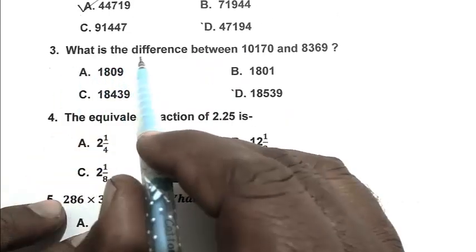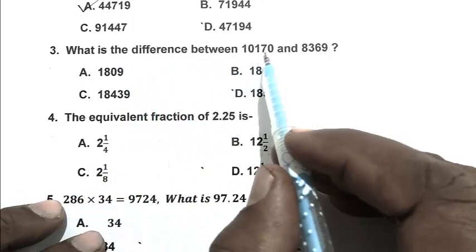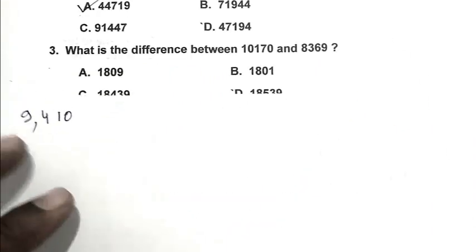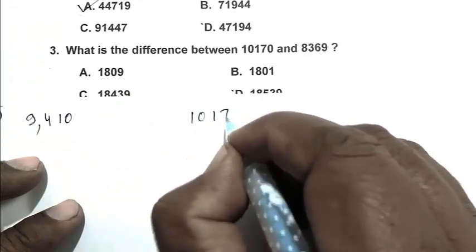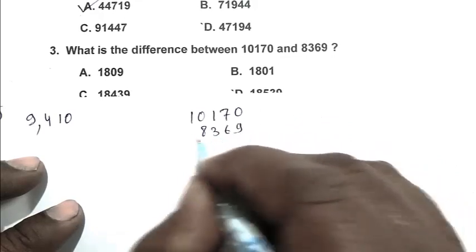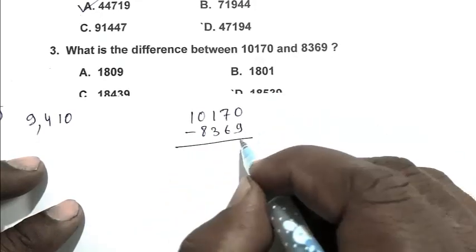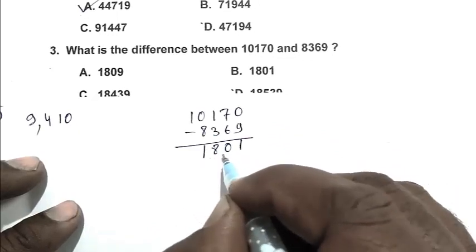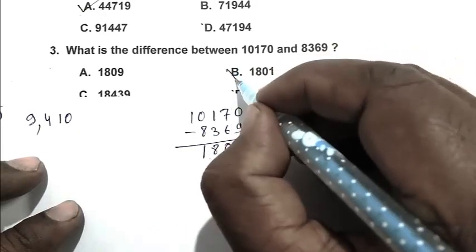Question number three: what is the difference between 10,170 and 8,369? So 10,170 minus 8,369, we subtract it, we got 1,801. So 1,801, B is the right answer.